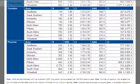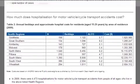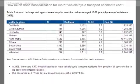Finally, Table 2 shows that motor vehicle and motorcycle accident hospitalisations cost approximately $2.6 million in the wheat belt in 2009, and over $40 million across the state.